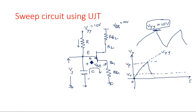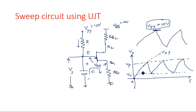Valley voltage VV is the minimum voltage required for the UJT to turn off again. When the transistor turns off, the capacitor has a charging path again, so it charges back up to the peak value VP, then discharges again. The capacitor oscillates between two voltages: VP (peak voltage — the minimum voltage required to turn the transistor on) and VV (valley voltage — the minimum voltage required to turn it off). The total amplitude is taken as Vs.